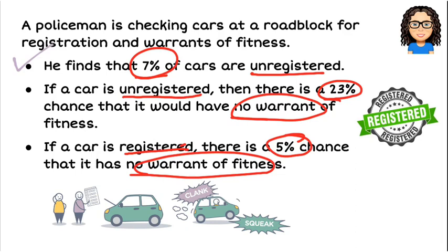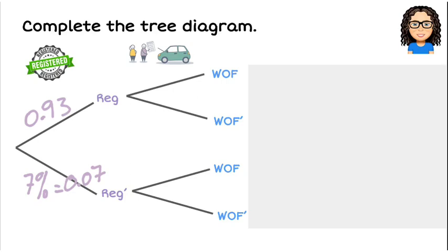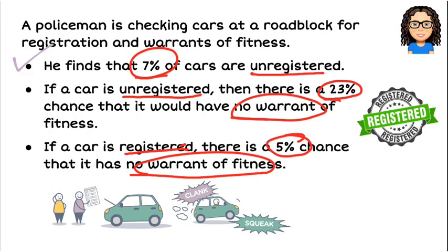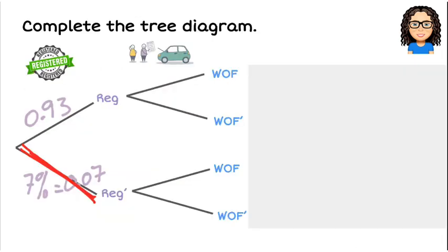If the car is unregistered — going down that pathway — there's a 23% chance it has no warrant. So the chance of no warrant is 0.23. The opposite of 23% is 77%, so there's a 77% chance it has a warrant even if it's unregistered.